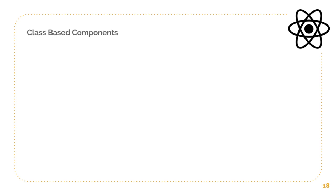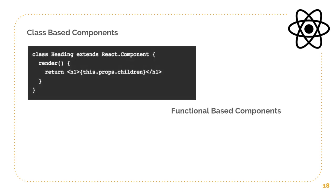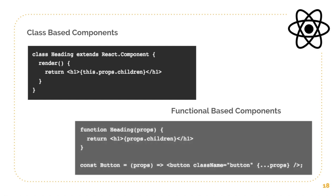A class-based component looks like this: you have a class you can name whatever you want, and then you extend React's component class. Inside, there is a render method which returns some content — in this case some JSX. You also have props, which we will discuss later. This is just an overview of how a class-based component looks.